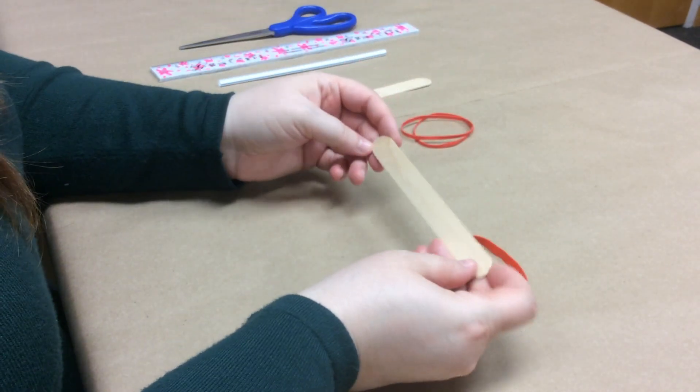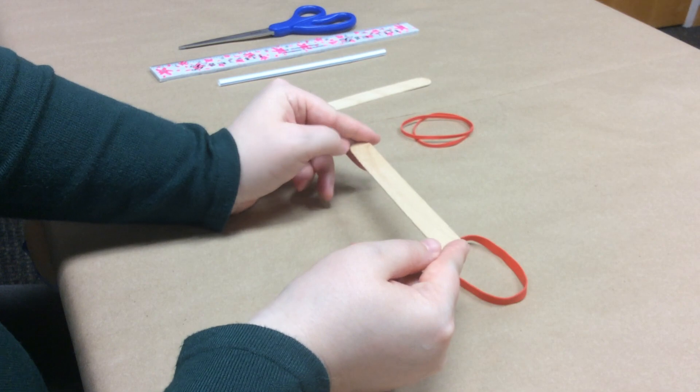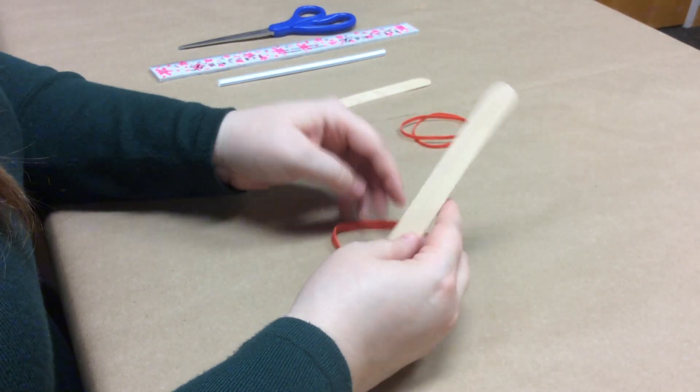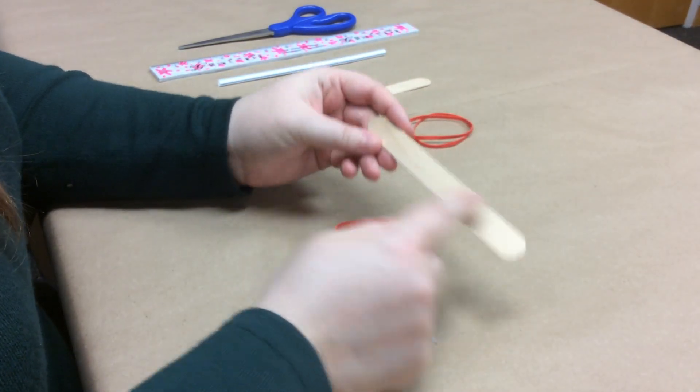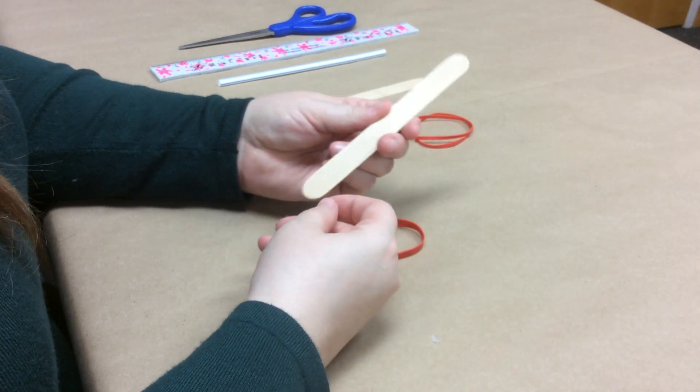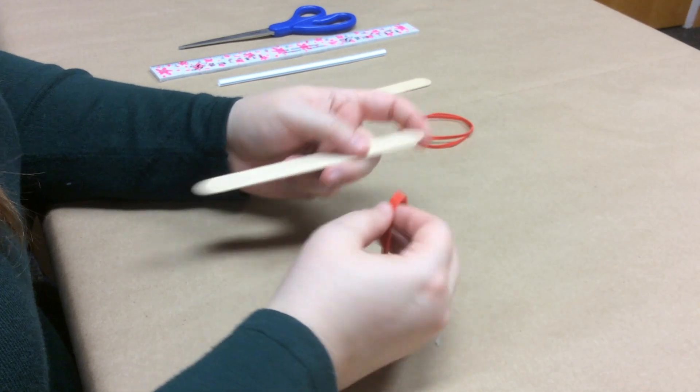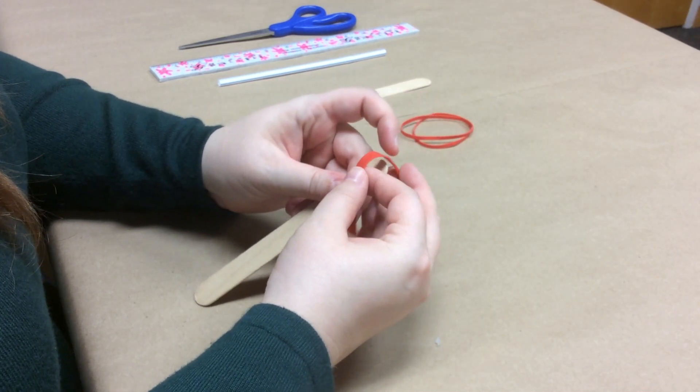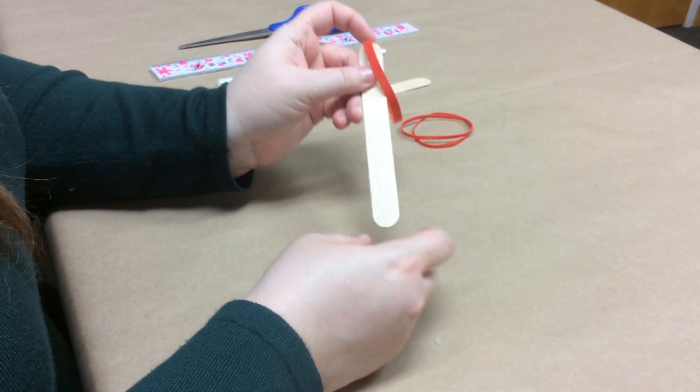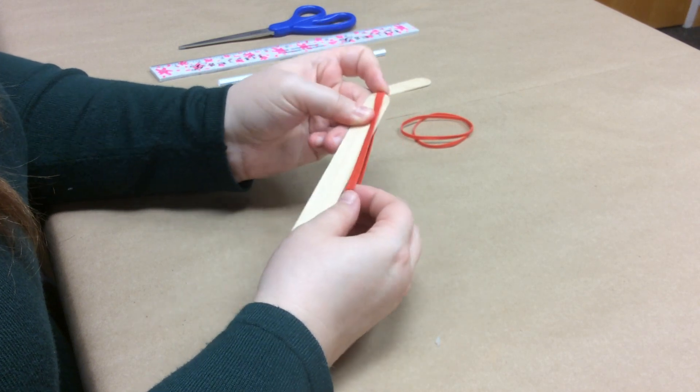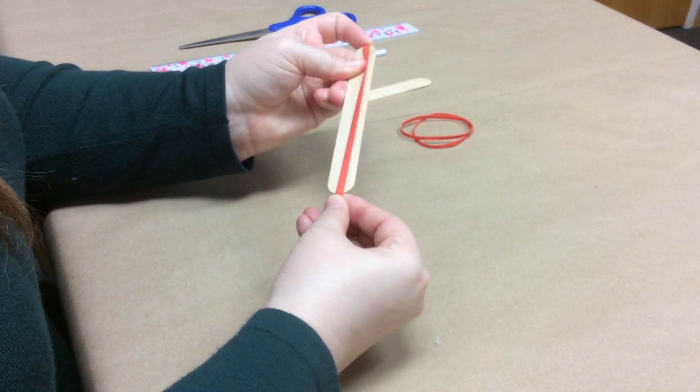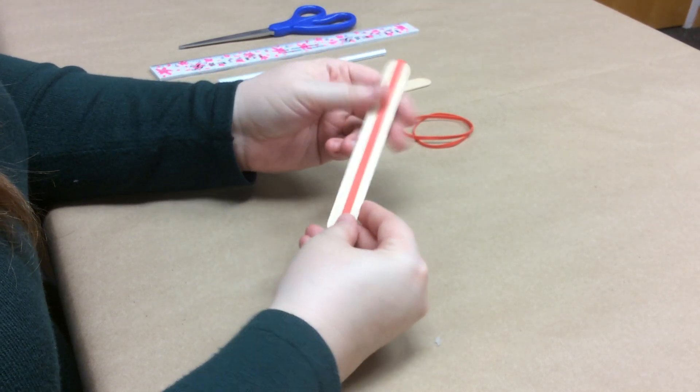So to start out with, you are going to take your craft stick, and you are going to stretch your rubber band around it vertically. So if this is our craft stick, we are going to do it the long way, not the small way, so the long way. So to do that, you are going to put it in the center of the top here, hold it down with one finger and stretch it down to the center of the other side, like that.